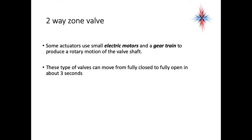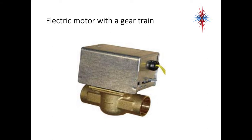Some actuators use small electrical motors and a gear train to produce a rotary motion of the valve shaft. These types of valves can move from a fully closed to a fully open in about three seconds. They're motor-driven. This is one. This is the Honeywell. It has an electric motor with a gear train. So our valve actuator is this top portion.